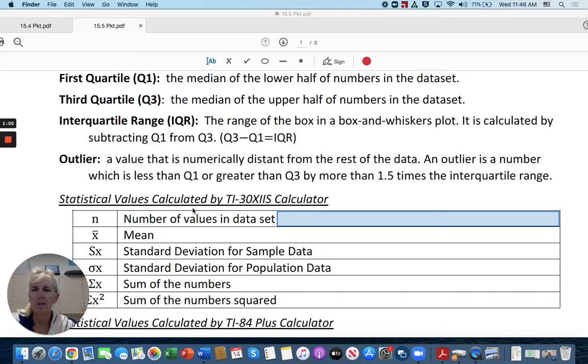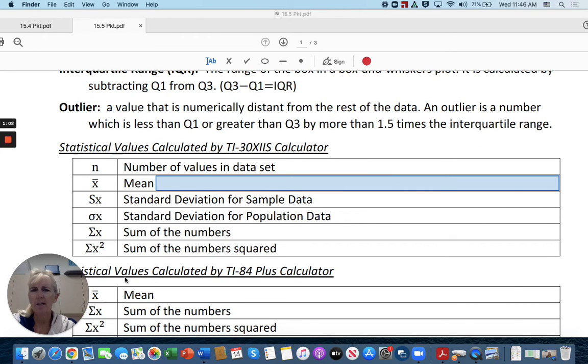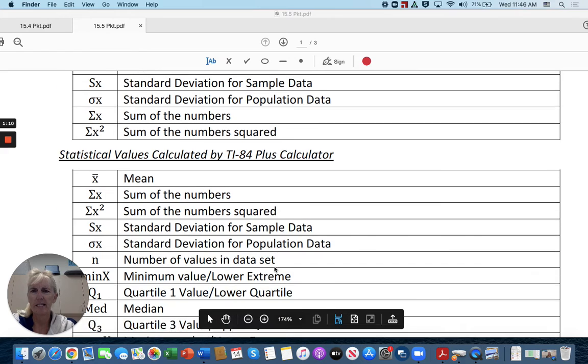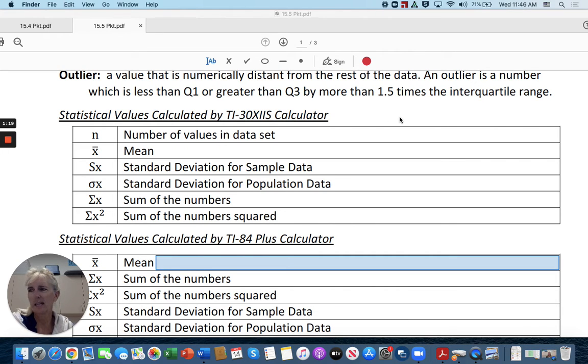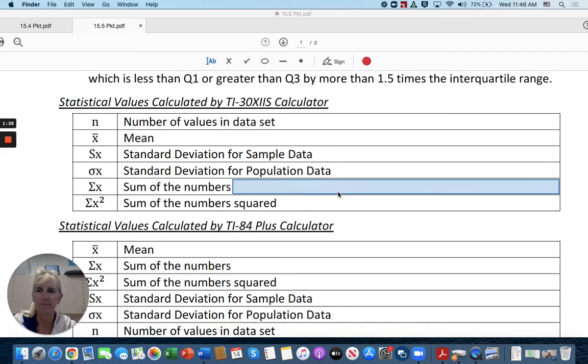So here's some more vocabulary. I'll let you go over that while I continue. So just so you are aware of it, you can do statistical values on the TI-30XA calculator, which is the one I have the most of in this class. So if you didn't want to use the graphing calculator, you can go ahead and enter numbers in your data set.